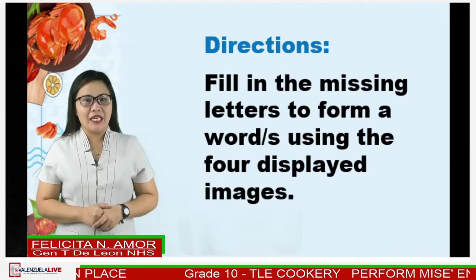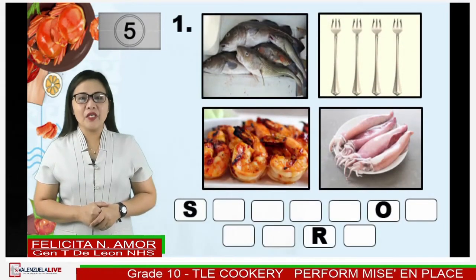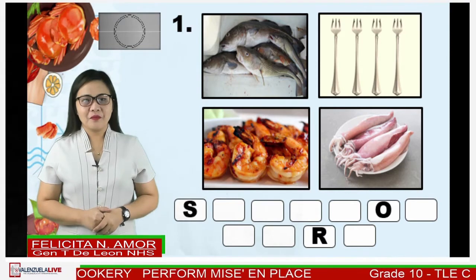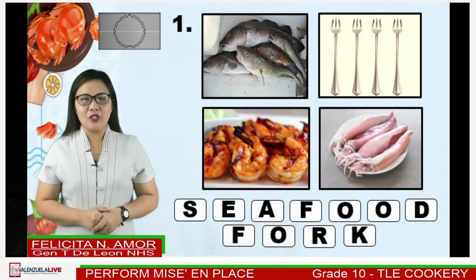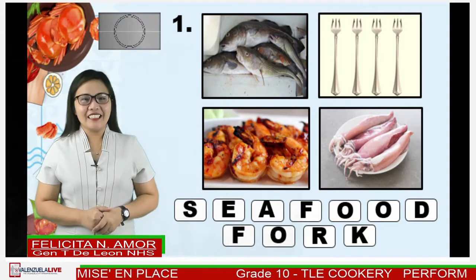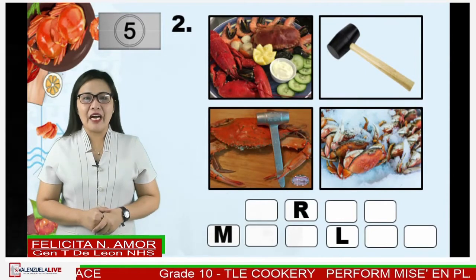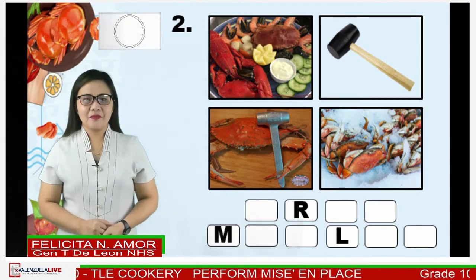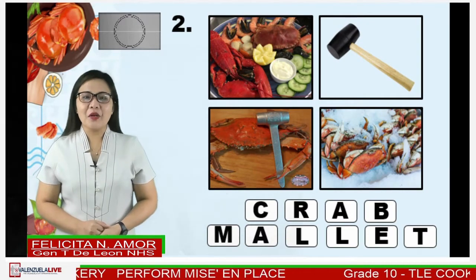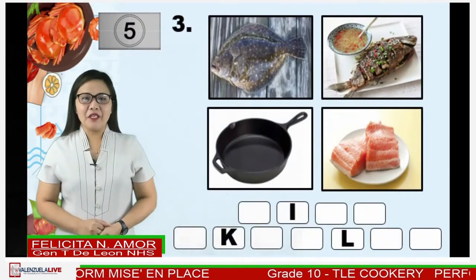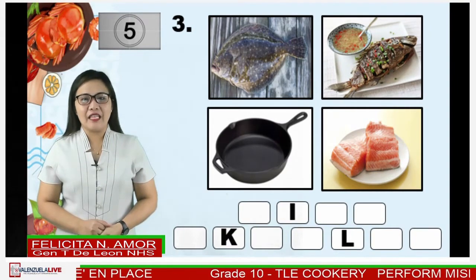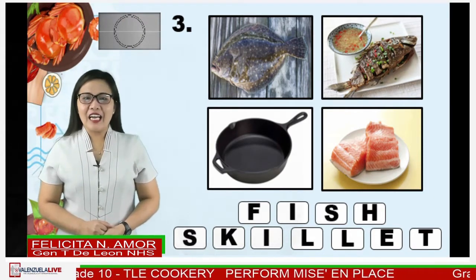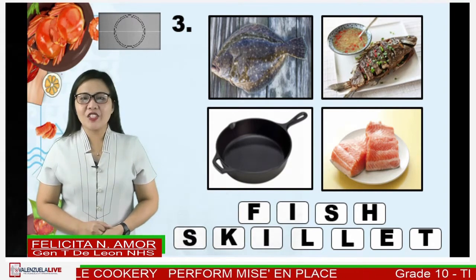Let's begin with number one. Your timer starts now. If your answer is fish turner, then you are correct. Next, number two — five seconds. The correct answer is crab mallet. Next, for number three, your five seconds starts now. If your answer is fish skillet, that's correct. Good job.